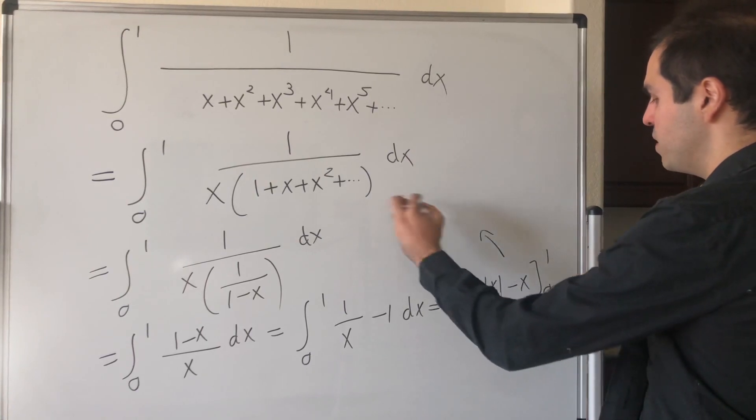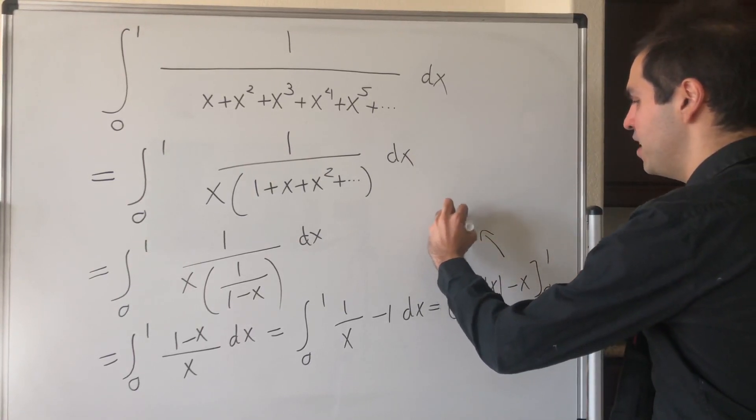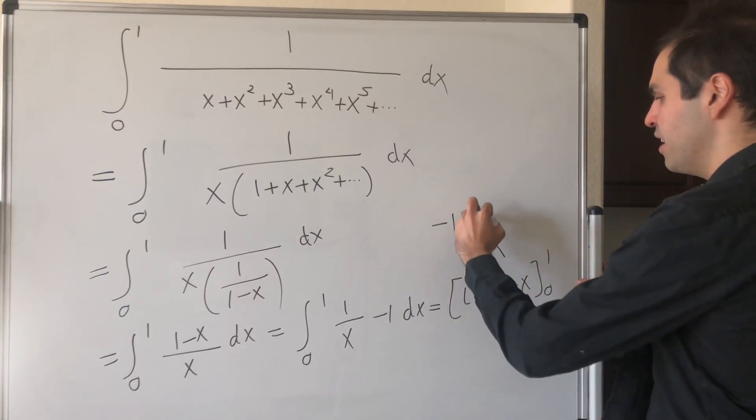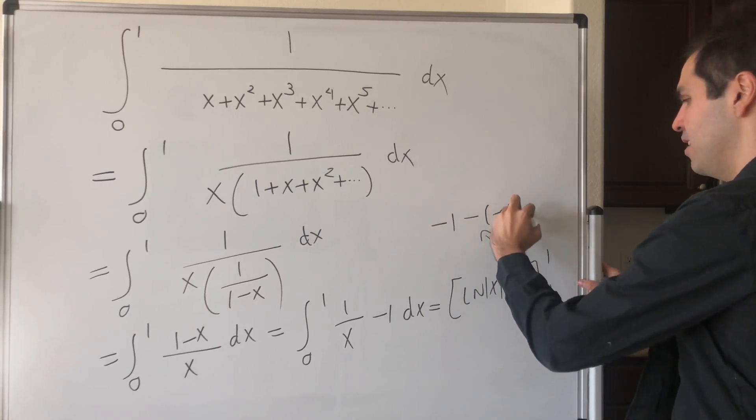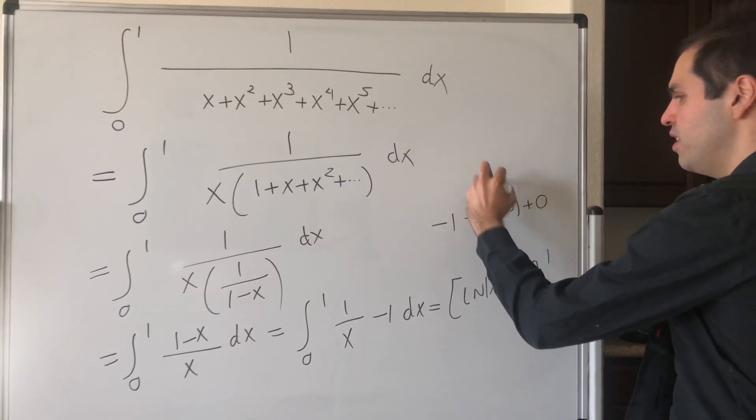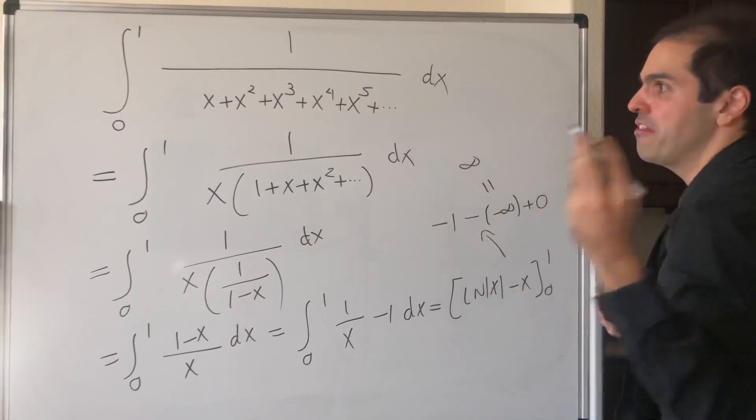But at 1, this becomes minus 1, I believe. And then you get minus, pretty much minus infinity, plus 0. And so in the end, this integral diverges.